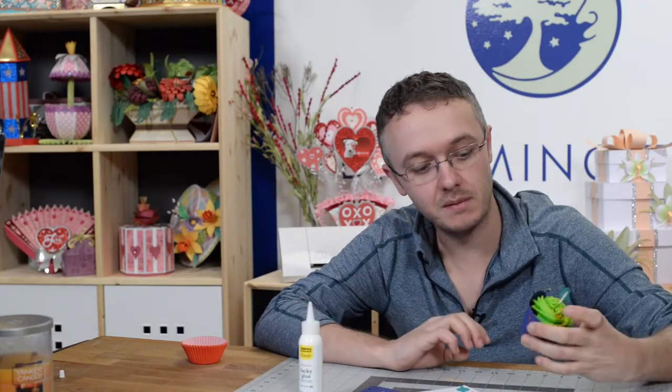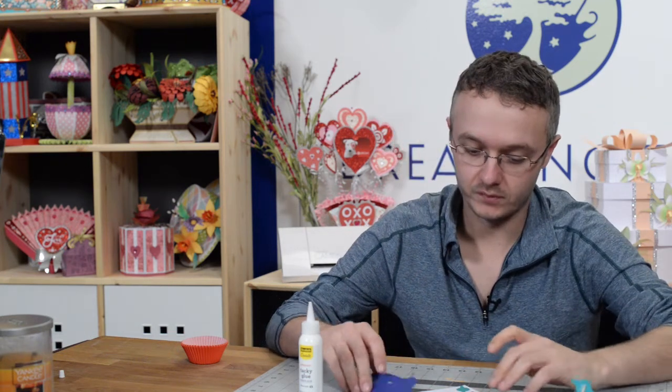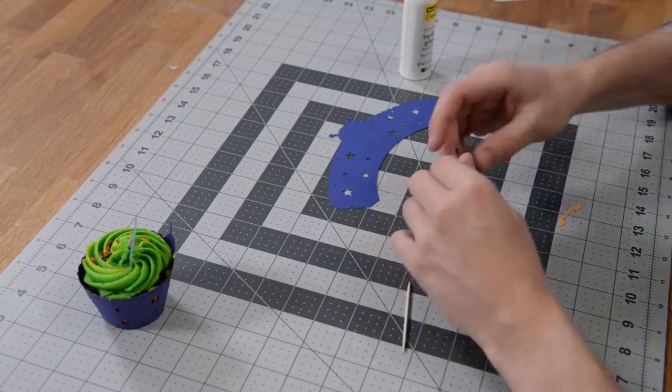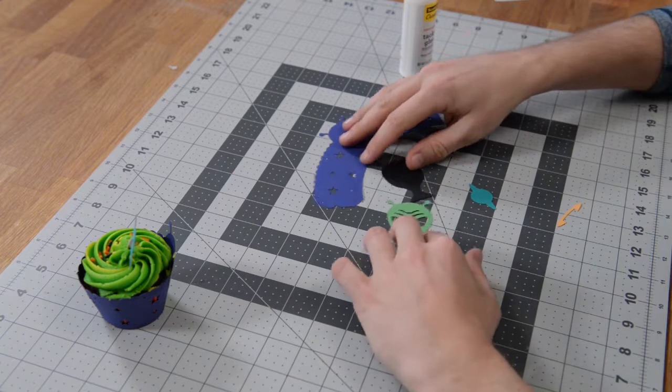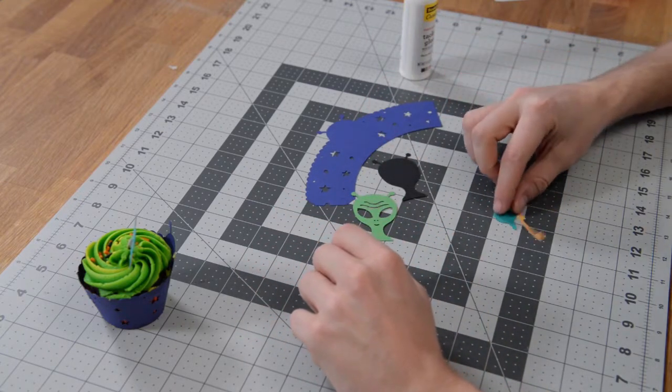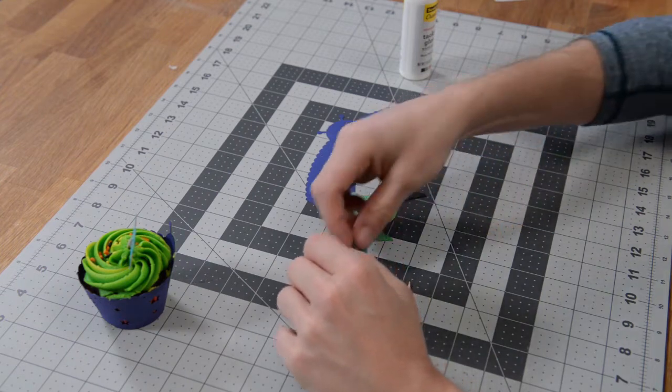Hey guys, it's Leo with Dreaming Tree, and in this video we're going to assemble this really quick alien cupcake wrapper. It's very simple, so let's take a look at the pieces. As you can see, it's made up of basically these three pieces for the actual wrapper itself, and then this is the little pick.